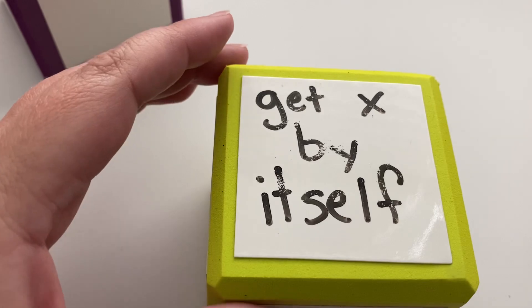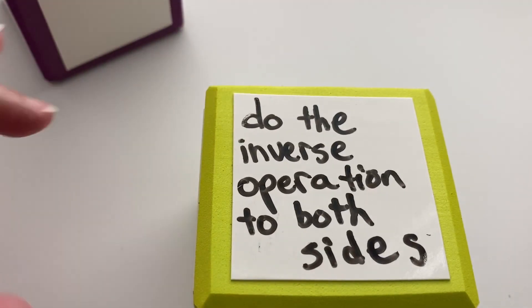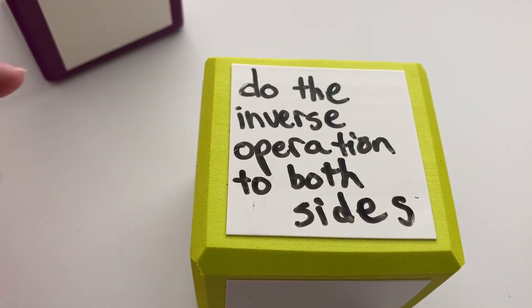Remember that when solving equations, we're trying to get x by itself. We do this by performing the inverse operation to both sides, which keeps our equation balanced.